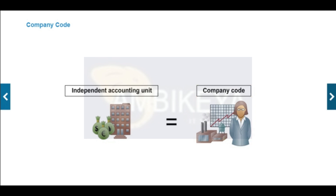General ledger accounting is kept at the company code level. It is used to create the legally required balance sheets and profit and loss statements for the company code. The company code must be specified for every financial transaction in SAP ERP, either manually or by deriving it from other data elements.